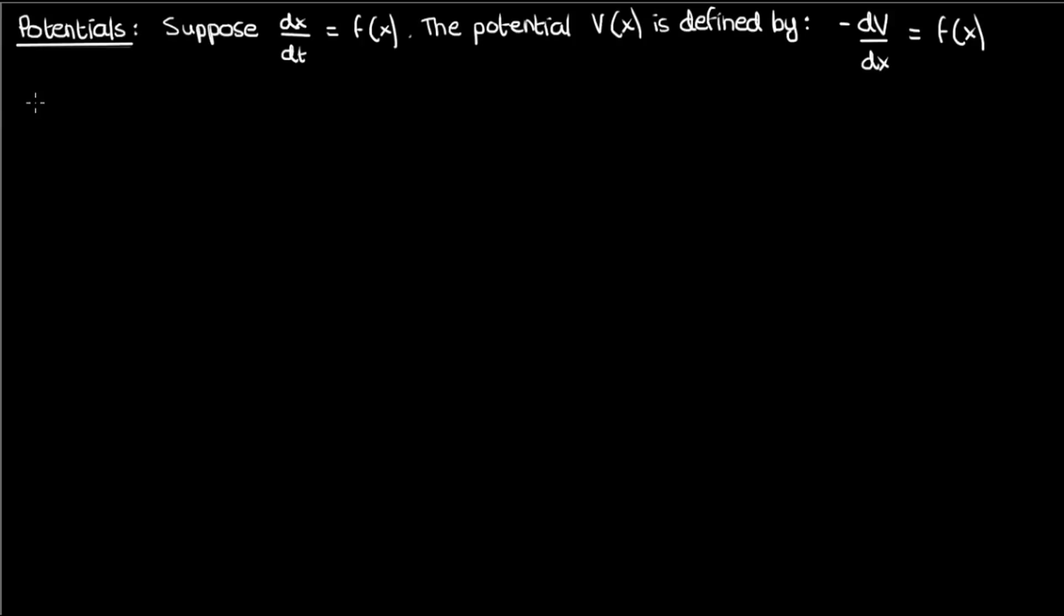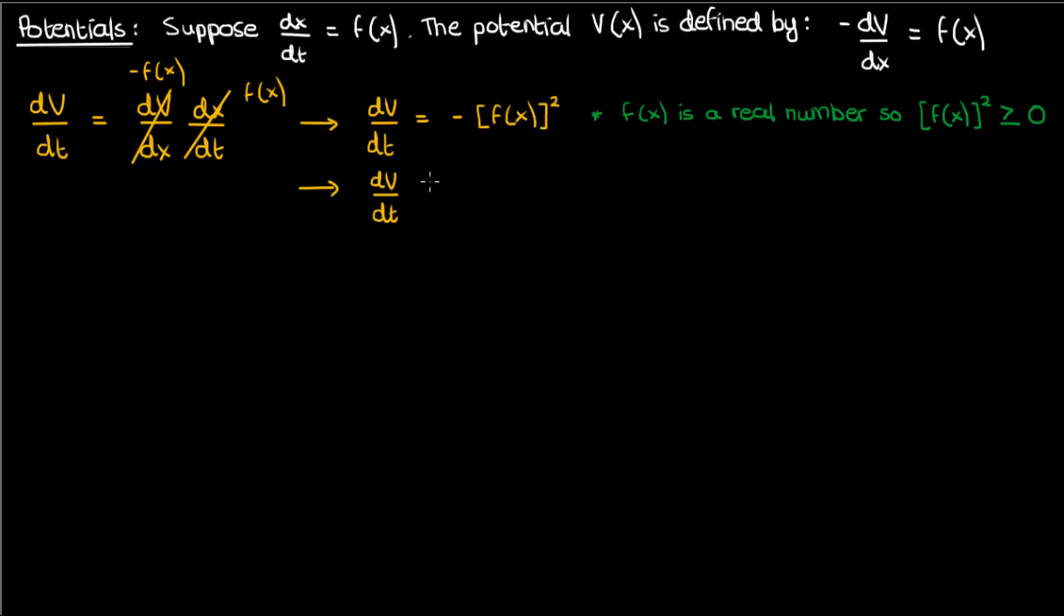But why do we care about potential? Why is it so important to us? Let me show you why it's so important using the rate of change of potential with time, using dV/dt in other words. By the chain rule, we know that dV/dt must equal dV/dx times dx/dt, and we already know that dx/dt is f(x) from the equation for our dynamical system, and that dV/dx equals negative f(x) from the definition of potential. So therefore, dV/dt is negative f(x) whole squared. But because f(x) is a real number, its square must be either positive or zero. Its square must be greater than or equal to zero. This means that dV/dt, which is negative f(x) whole squared, must be the opposite, it must be less than or equal to zero.